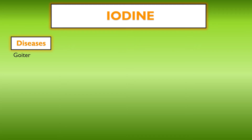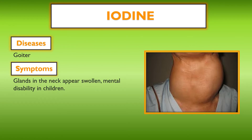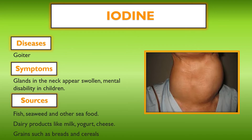The next disease is goiter, caused due to the deficiency of iodine. Symptoms include swollen glands in the neck and mental disability in children. As you can see from the picture, the neck area appears bulgy. Salt is the main source of iodine. Foods like fish, seaweed, and other seafood contain good amounts of iodine. Dairy products like milk, yogurt, and cheese, and grains such as breads and cereals also contain iodine.